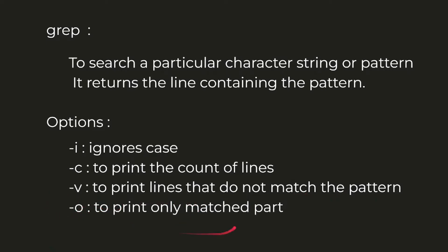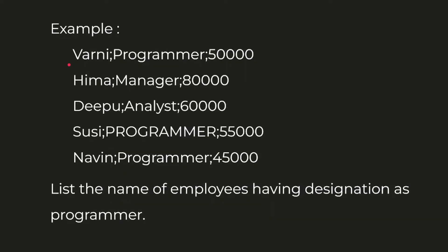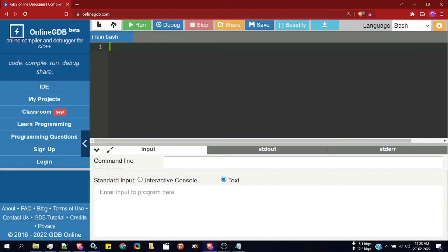The -v option prints all the lines that do not match the pattern. The -o option prints only the matched part of the particular line. Consider the data given — we have three fields: employee name, employee designation, and employee salary. Our task is to print the names of employees having the designation as programmer — that is, to print the first, fourth, and fifth rows.